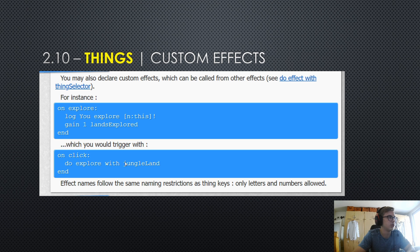And let's say for instance we have a building with the thing key, jungle land. And this is basically the thing selector. When you refer to a thing by its thing key in code, that's called referring to it with a thing selector. So, basically just selecting it.